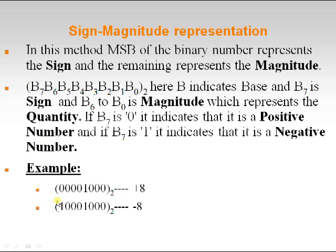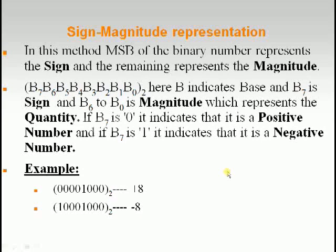For example, a binary number whose MSB is 0 and remaining bits represent the quantity 8 is therefore positive 8. Similarly, a binary number whose MSB is 1 with remaining bits representing the same quantity is considered minus 8. This is how we represent values using sign magnitude representation.